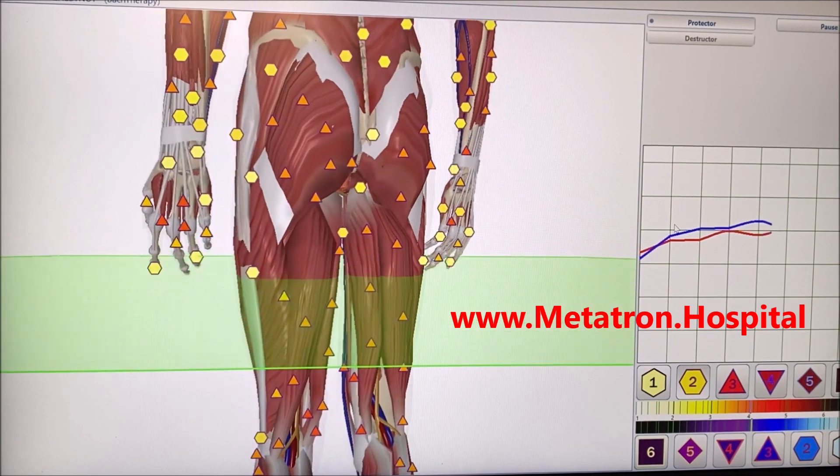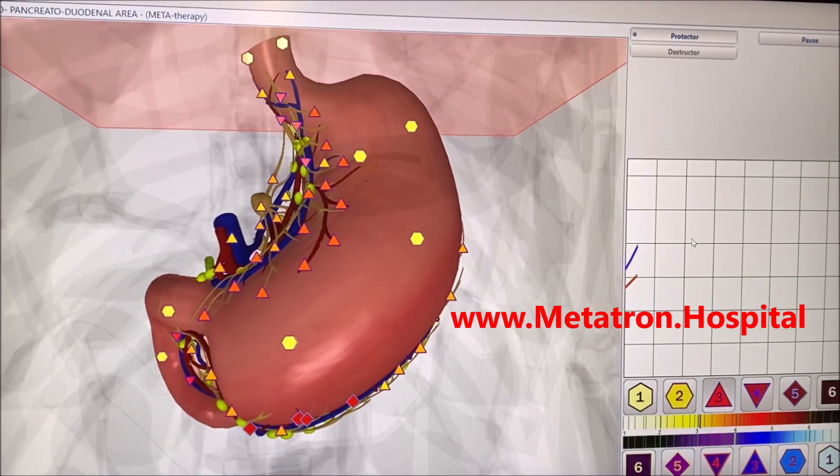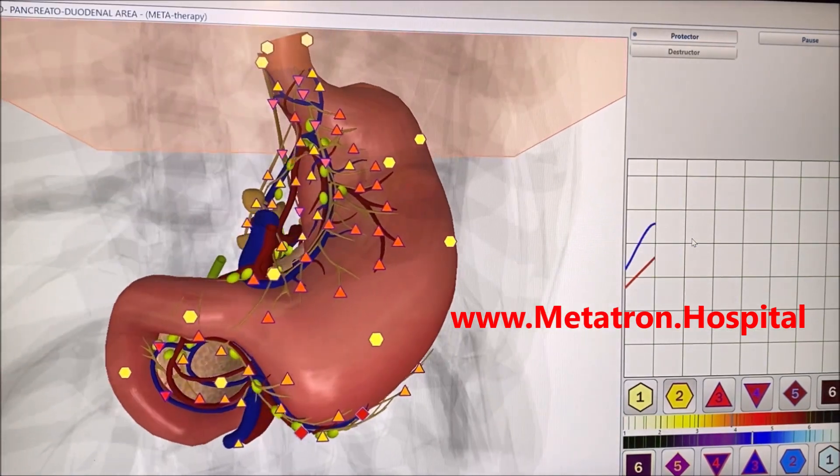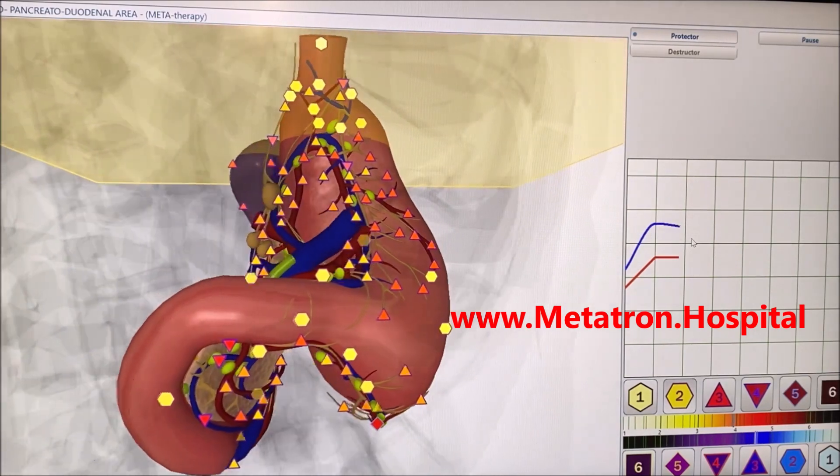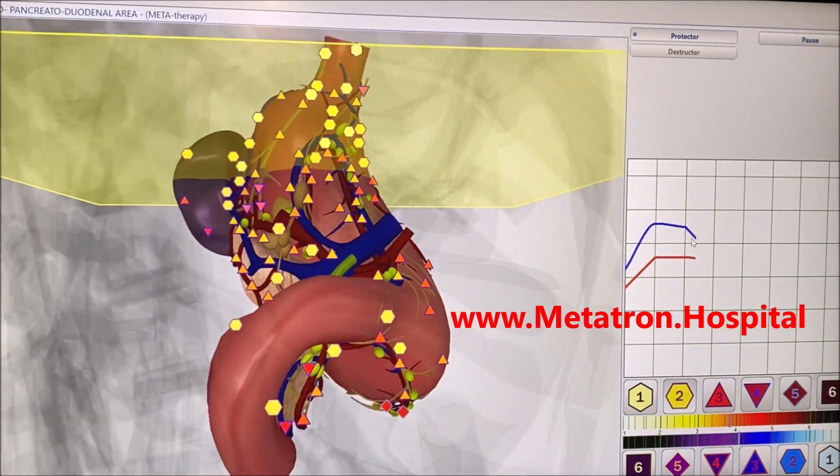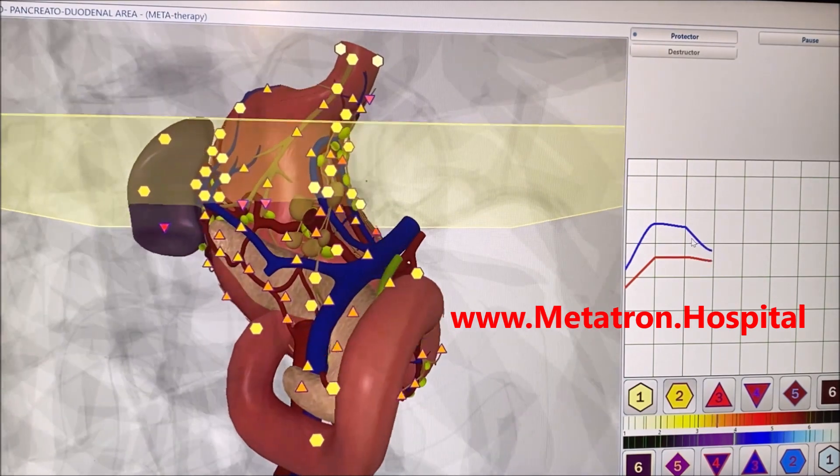Now anyone can try Metatron Remote Quantum Bioresonance before buying their own device. Just send your quantum ID, personal information, and you will receive a health report within hours.